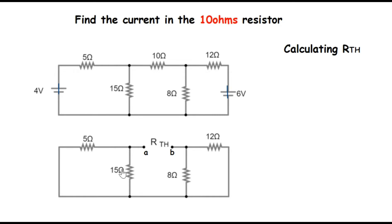Now with this circuit I have to calculate for the effective resistance, which will be the Thevenin resistance. Looking at the circuit, the 5 ohms and the 15 ohms resistors are in a parallel connection. Similarly, the 8 ohms and 12 ohms resistors are also in a parallel connection. I'll find the effective resistance for each parallel combination, then add them since they will be in series.